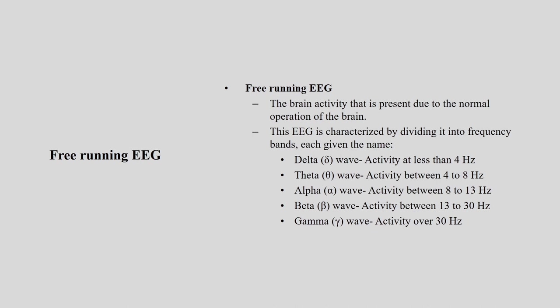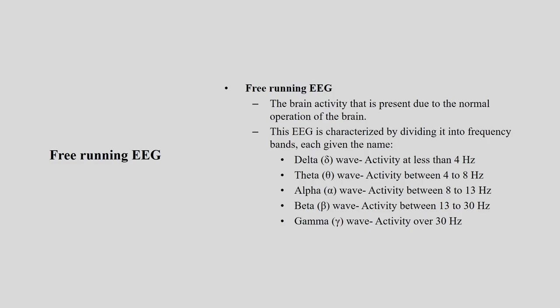Free running EEG represents brain activity present during normal operation of the brain — when no external stimulus is given. This EEG is characterized by dividing it into frequency bands. There are five major bands: delta, theta, alpha, beta, and gamma. Delta is 4 Hz or less; theta is 4 to 8 Hz; alpha is 8 to 13 Hz; beta is 13 to 30 Hz; and gamma is more than 30 Hz.